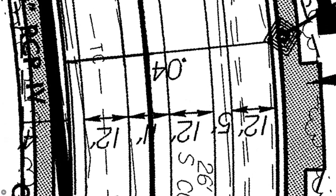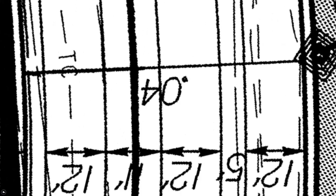At this point we're at our design superelevation, which continues through the curve until we start the transition back towards normal crown, rotating the pavement back to 0.02 on each side with water flowing away from the centerline towards both edge lines.